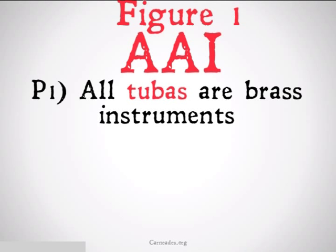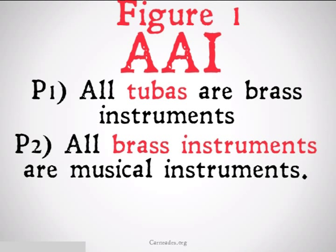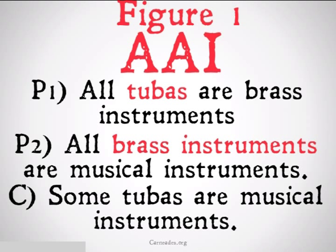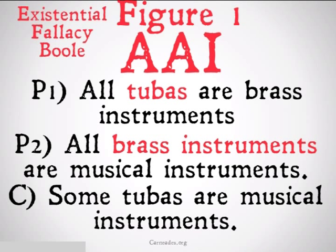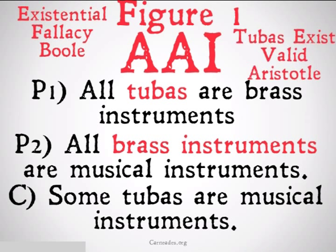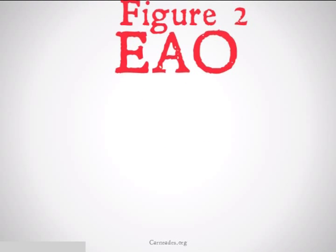Figure one, AAI: All tubas are brass instruments. All brass instruments are musical instruments. Therefore, some tubas are musical instruments. The red terms are the terms that are distributed. This commits the existential fallacy for Boole because I is a particular statement and both of our A's are universal. However, because tubas exist and tubas is the superfluously distributed critical term, it's going to be valid for Aristotle.